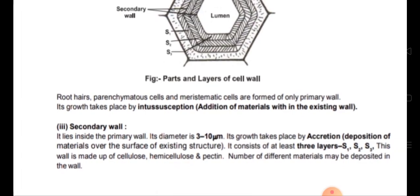The secondary wall lies inside the primary wall. Its diameter is 3 micrometers. Its growth takes place by accretion — that is, deposition of materials over the surface of the existing structure. This deposition occurs from the cell cytoplasm. It consists of at least 3 layers: S1, S2, and S3. This wall is made up of cellulose, hemicellulose, and pectin, and various materials may be deposited in the wall.